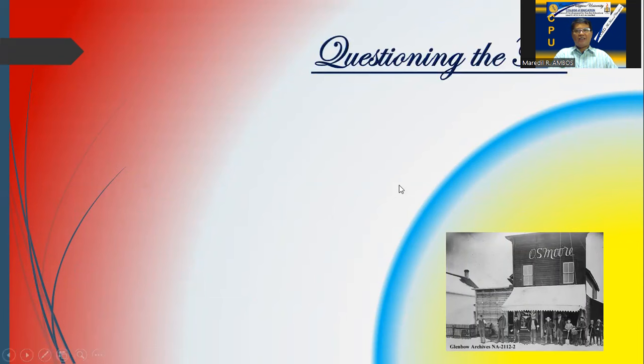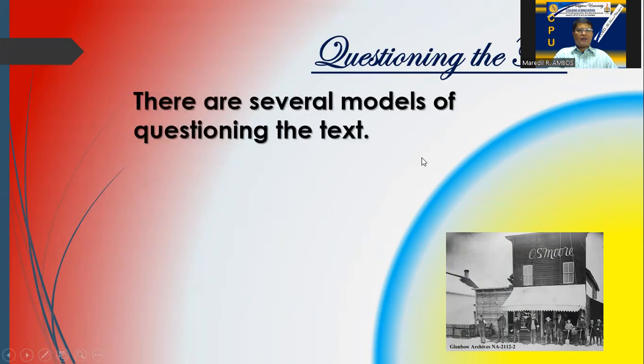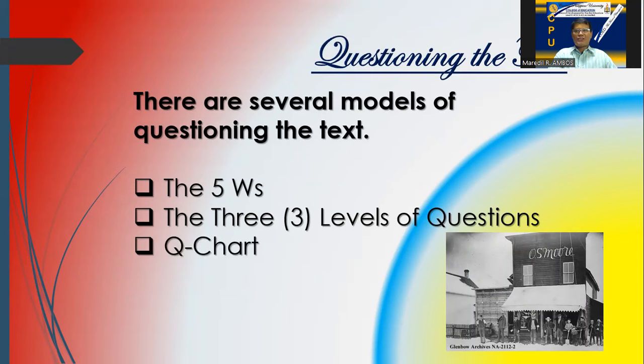Additional characteristics include creating text for various audiences and purposes, since we have different audiences and different purposes for our texts. There are several models of questioning the text: the five W's, the three levels of questions, the Q chart, and Bloom's taxonomy — so in all, four models.